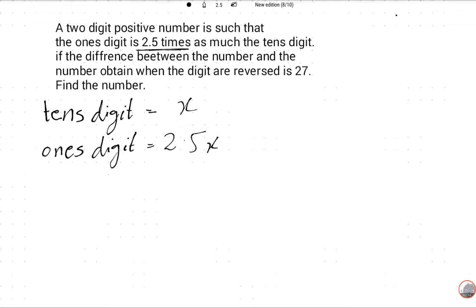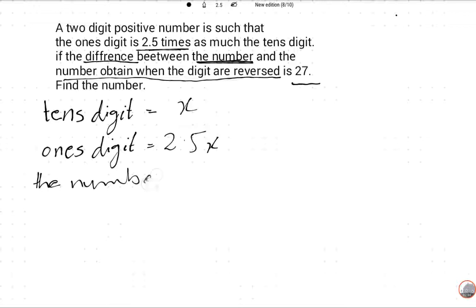The main concept here is: we need two numbers — the original number and the number obtained when the digits are reversed. We then find the difference between them, which is equal to 27. This gives us the corresponding equation.